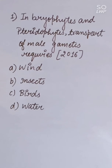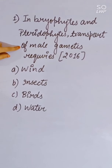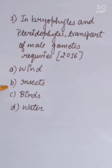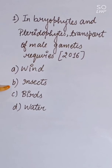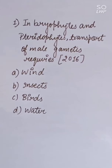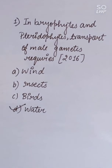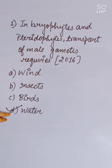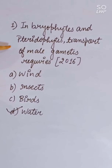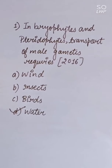2016 question: In bryophytes and pteridophytes, transport of male gametes requires: wind, insects, birds, or water. Correct answer is water — water is the medium by which male gametes of bryophytes and pteridophytes are transferred.